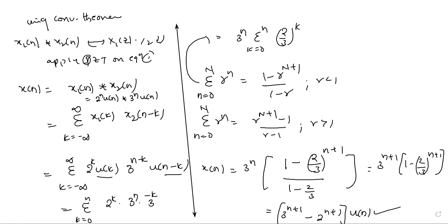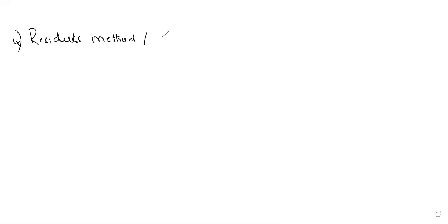This is the convolution method — how to use it to find the inverse Z-transform. This is the final answer for the given Z-transform function. Let us now go to the last method: the residue method. To calculate residues, there are many processes involved, which I will cover in detail in other lectures. For now, let us see for a basic function how to use the residue method, also known as Cauchy's integral theorem.